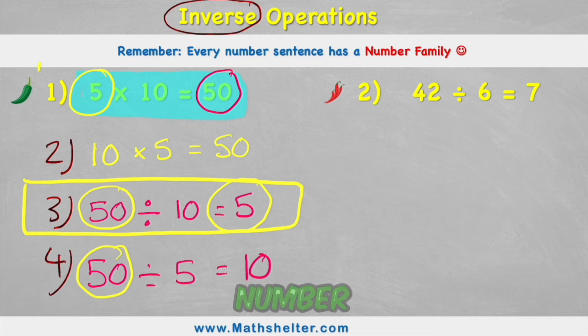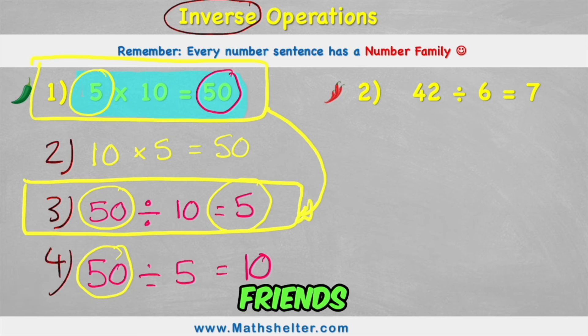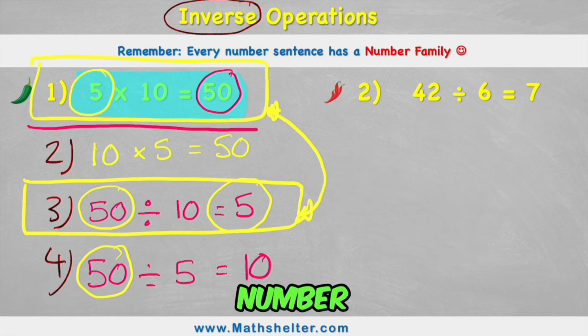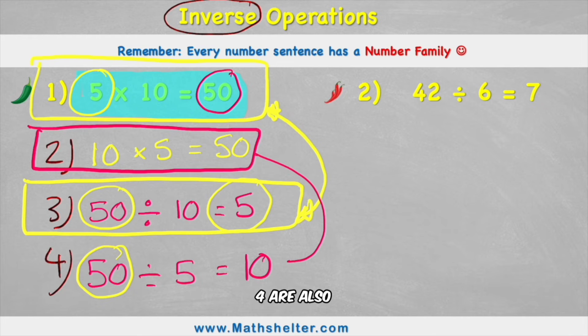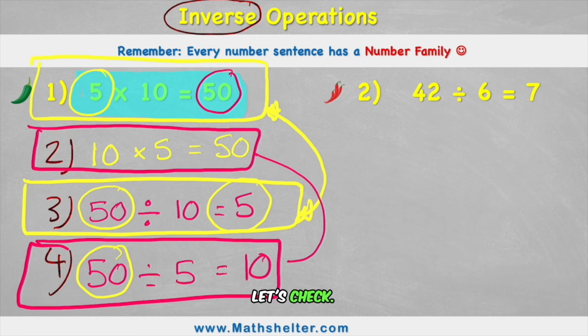So what it means is that number sentence 1 and number sentence 3 are best friends in the family. They're still part of the same family, but they're like best buddies. And therefore number 2 and number 4 are also best buddies, because they would be the inverse of each other as well. Let's check. We have 10 at the start, 10 at the end, 50 at the end, 50 at the start. Absolute opposites.